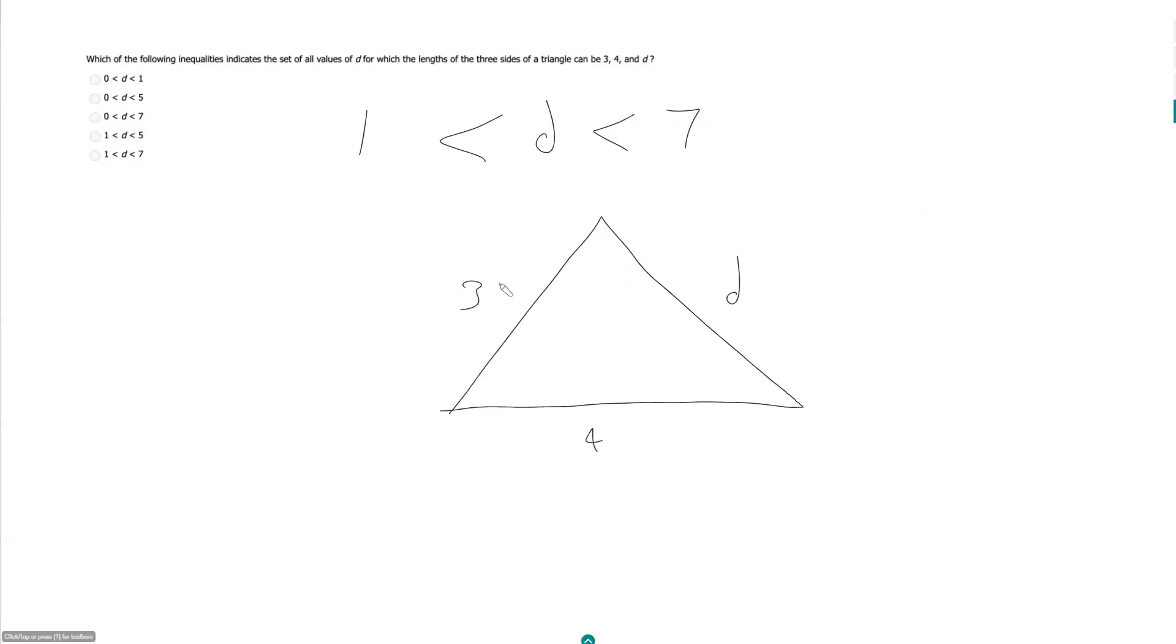This means this side here plus this side here must be greater than the length of this side here. So 7 must be greater than D, or D must be less than 7.